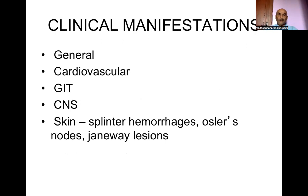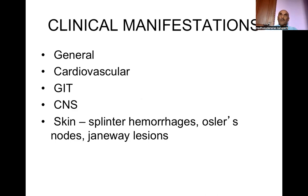Coming to clinical manifestations: the presentation could be subtle, with prolonged fever and non-specific manifestations such as general weakness, arthralgia, and cutaneous manifestations. Or it could be acute, with high-grade temperature, septicemia, and shock. There could be cardiovascular manifestations with the appearance of new-onset murmurs, especially regurgitant murmurs. If the patient presents with heart failure in a known case of congenital or valvular disease, we have to suspect infective endocarditis.